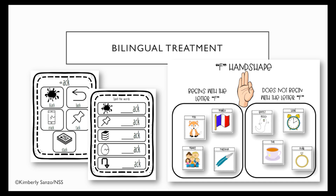The example on the right shows how ASL and English are different. Take the F handshape — you have pictures cut out for the student and tell them that all of these pictures use the F handshape when you sign them. Every single one of these signs uses that F handshape in American Sign Language. But they don't all start with the letter F in English. Some do, but some don't. So you have them sort out which ones actually start with the letter F in English and which ones don't. This builds not only metalinguistic knowledge but literacy skills as well — it helps with spelling and reading and writing.